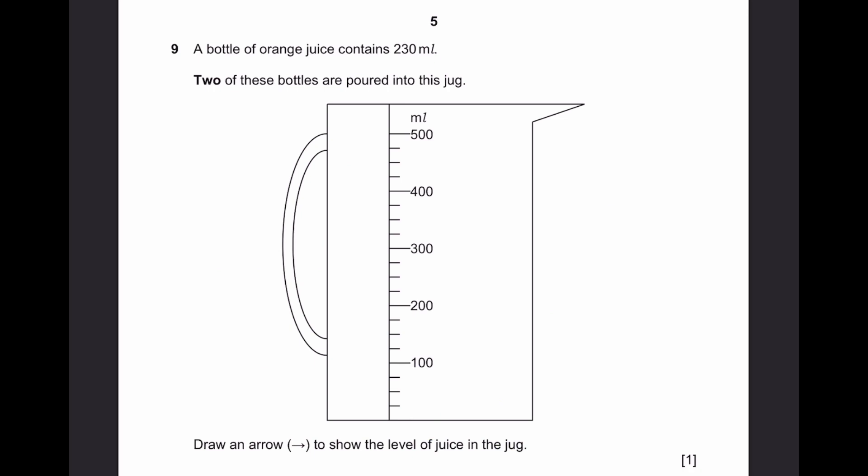Question 9. A bottle of orange juice contains 230 milliliters. Two of these bottles are poured into this jar. Draw to show the level of juice in the jar. Two bottles means 230 times 2, which is 460 milliliters. This is 450 because it's in the middle of 400, 500. 460 will just be above there. So I'll draw an arrow just over there.